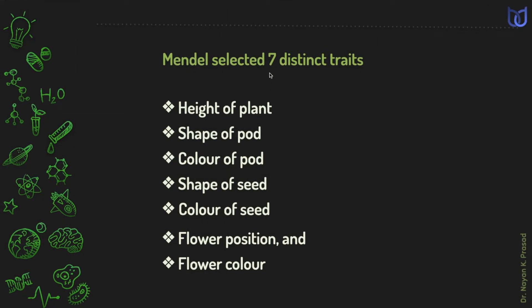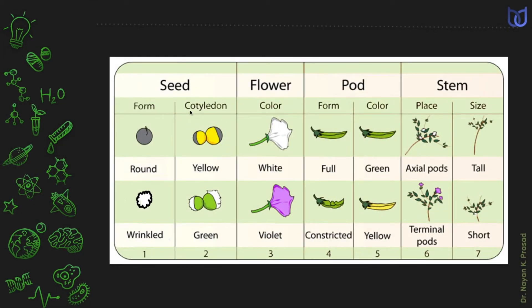Mendel worked with seven characteristics of pea plants, like plant height, pod shape and color, seed shape and color, and flower position and flower color. In this chart, we see the seed, flower, pod, and stem in pea plants.